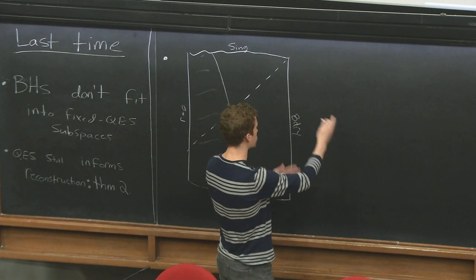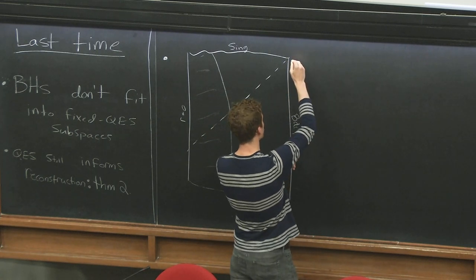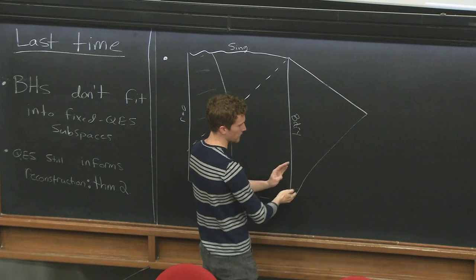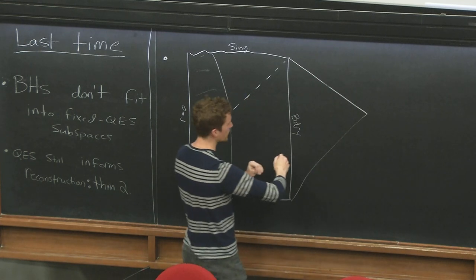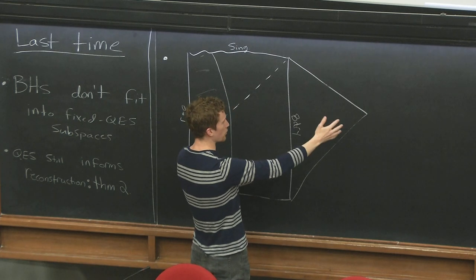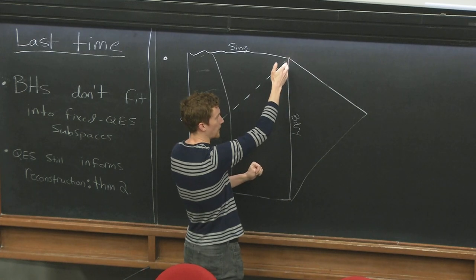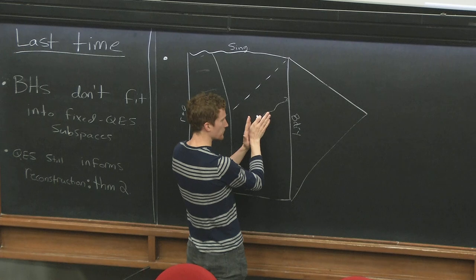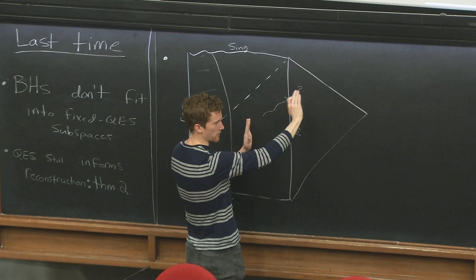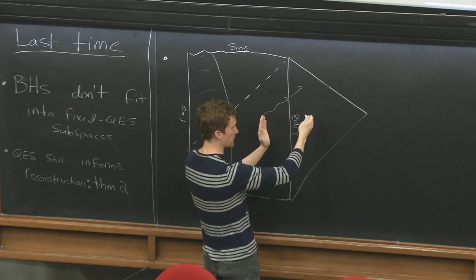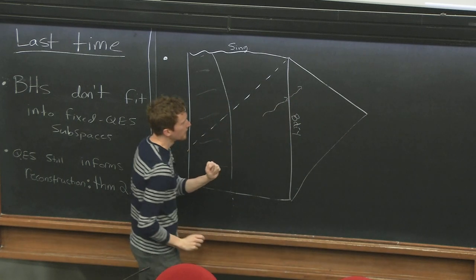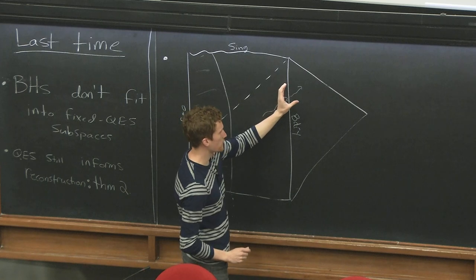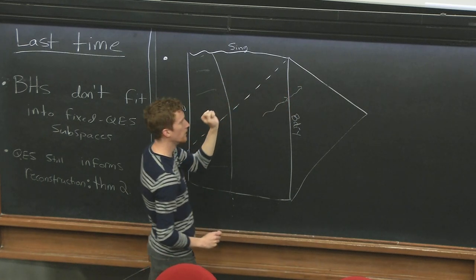We coupled the black hole to a reservoir, which I draw like some non-gravitational flat space region. Since it's flat space, this is the Penrose diagram — a triangle — already glued to the asymptotic boundary. This emphasizes the idea that modes passing radially outward and hitting the boundary just pass through and enter the flat space region. This allowed the black hole to evaporate because the outside Hawking modes don't get reflected back.